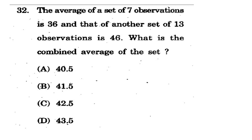Question 32: The average of a set of 7 observations is 36, and another set of 13 observations has an average of 46. What is the combined average of both sets? Total of first set = 7×36 = 252; total of second set = 13×46 = 598; combined total = 850 over 20 observations. Options: 40.5, 41.5, 42.5, 43.5. The correct answer is option C - 42.5.